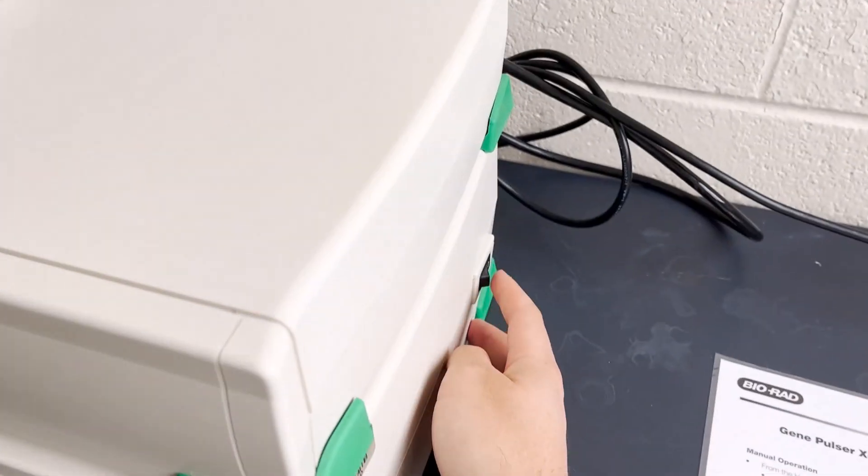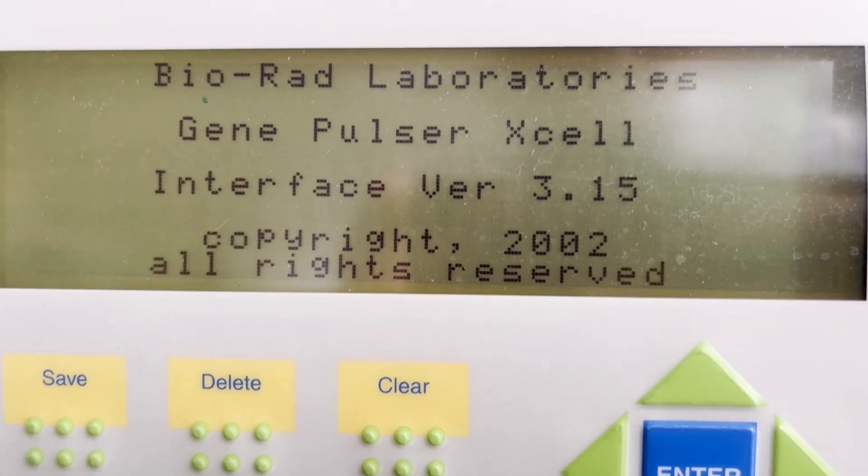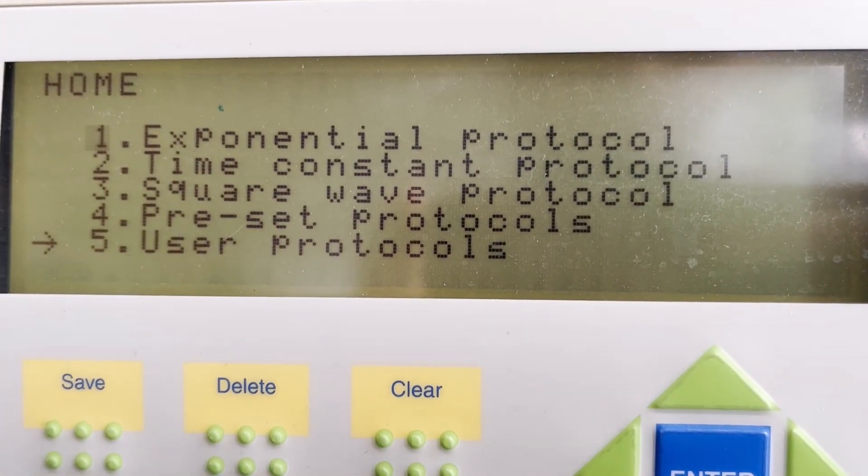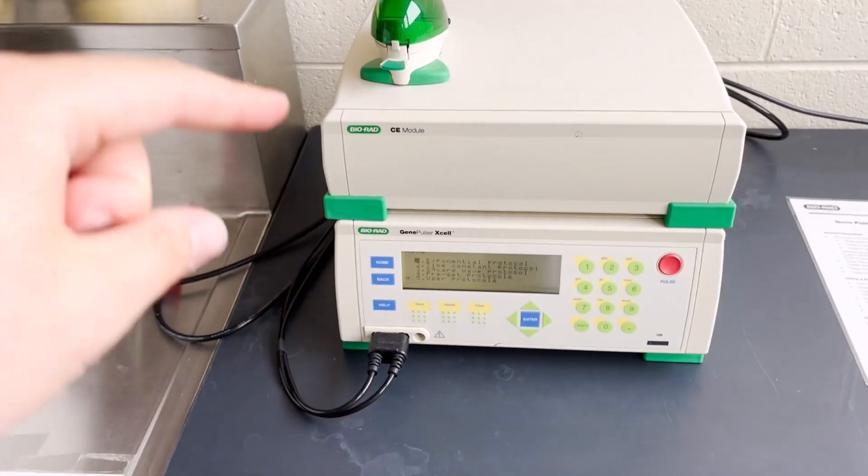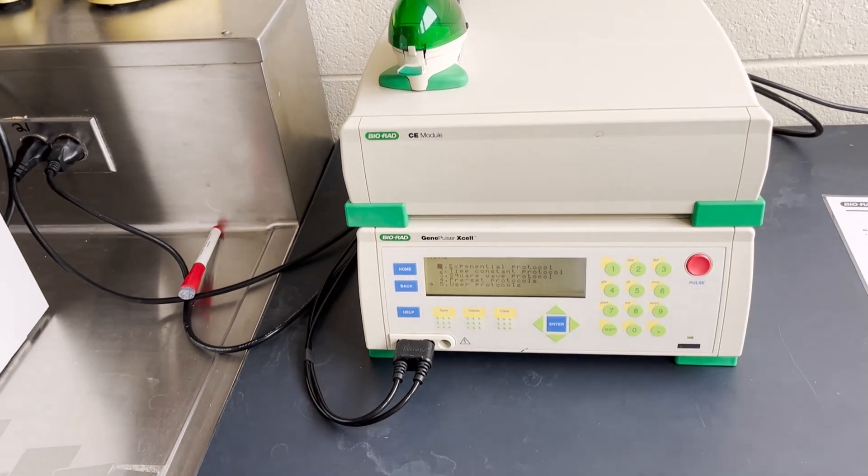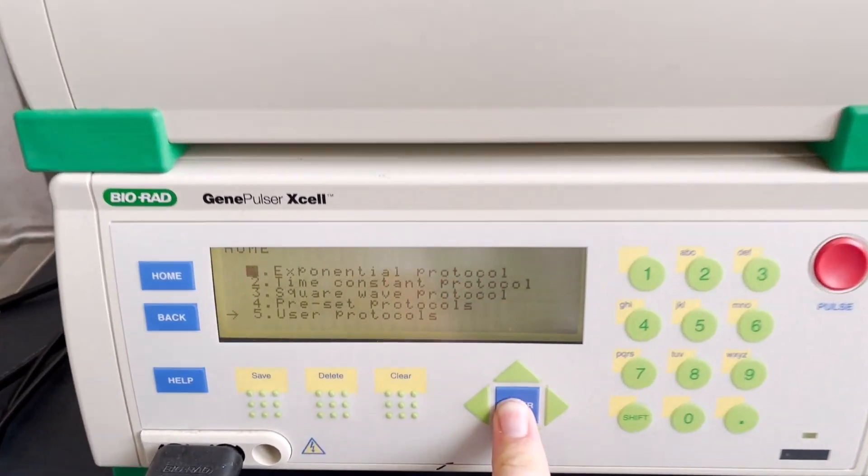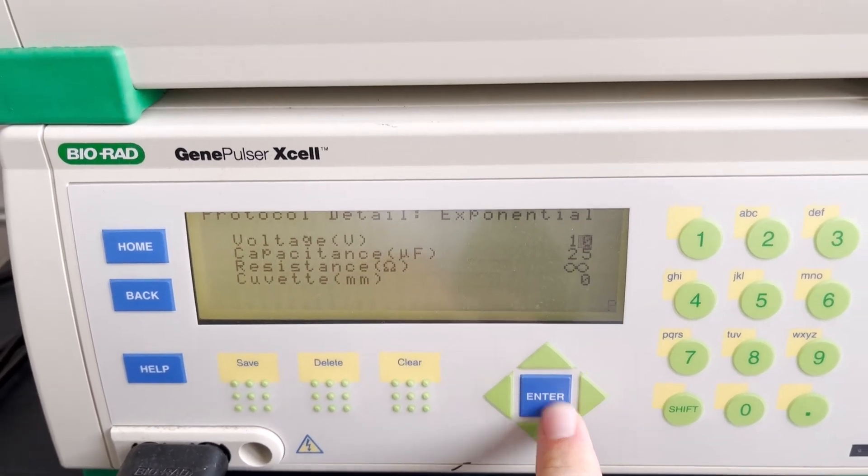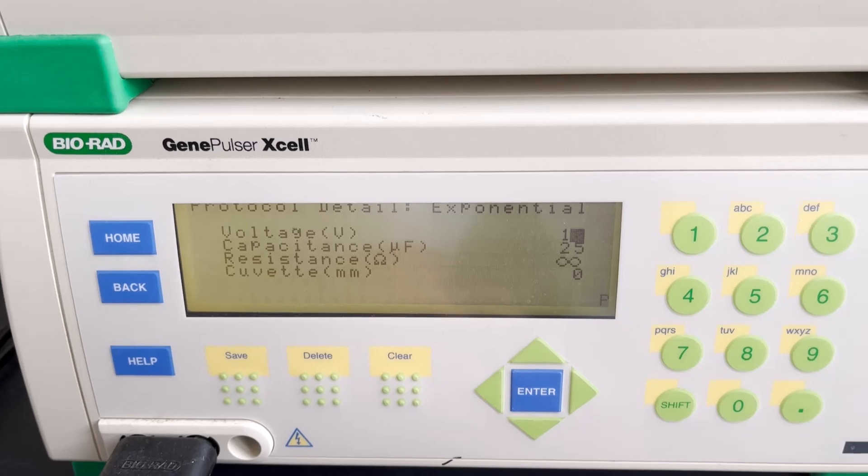If we turn the machine on, there's a switch on the right. There's a few options for types of pulses to use. An exponential protocol is a typical pulse which over time starts at a high voltage and it quickly decays exponentially. If you choose this type of protocol, you'll be able to set the voltage, capacitance, resistance, and the type of cuvette you're using, which we'll talk about in a second.